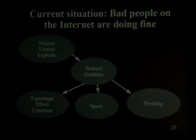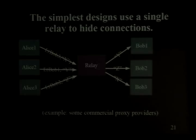The current situation is the bad guys are doing great on the internet and the good guys have very few options. So how do you actually build one of these? The simple answer is one centralized proxy computer and all users go to it. If they're very lucky they use SSL so somebody watching Alice doesn't learn her destination immediately.